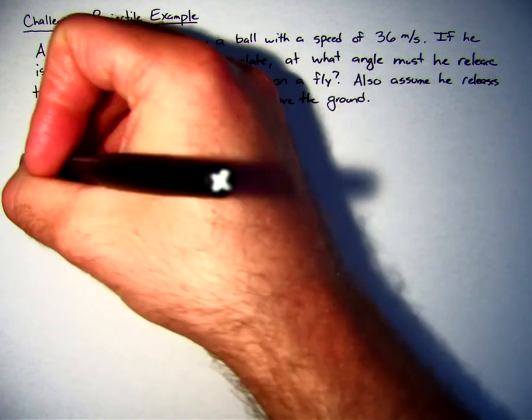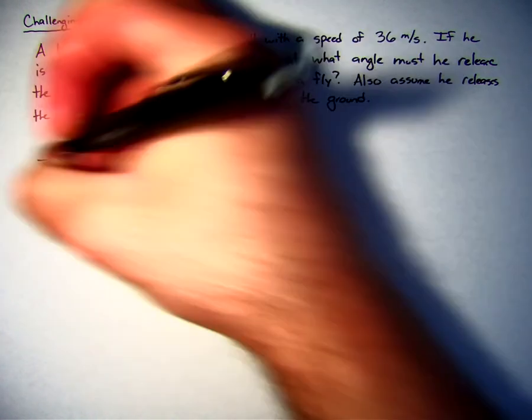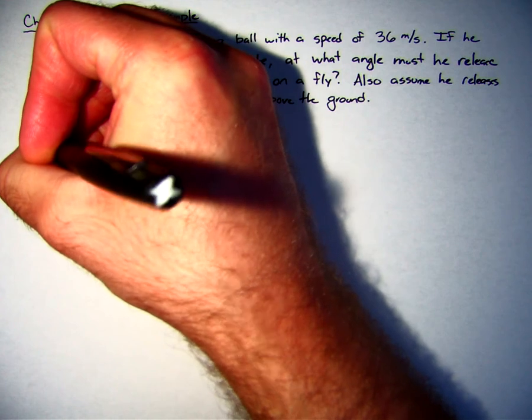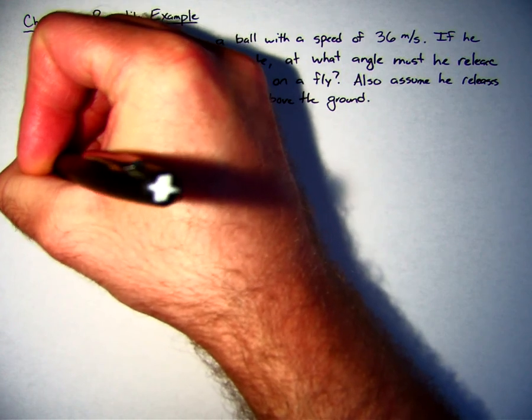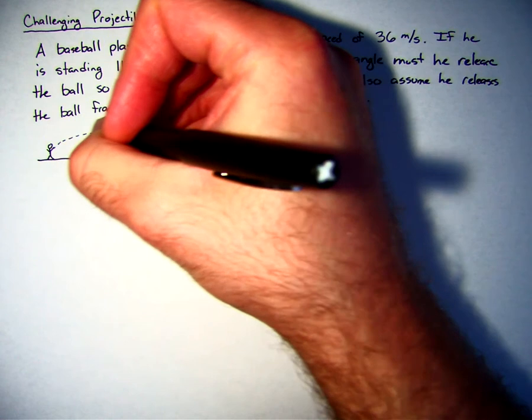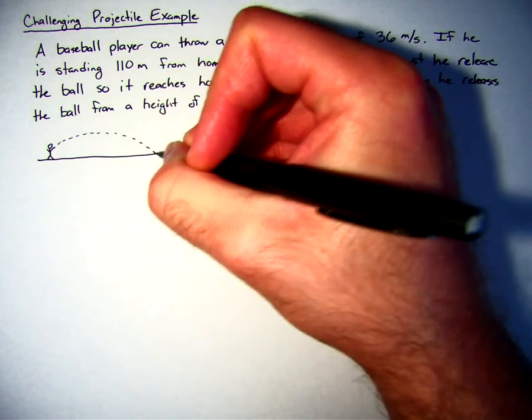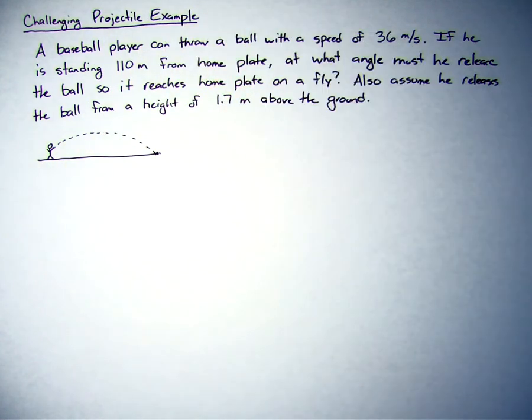So if I draw out this picture, basically he's standing right here. He's going to release the ball, and it's going to go and hit home plate right there. And so we're trying to figure out the angle of his release.